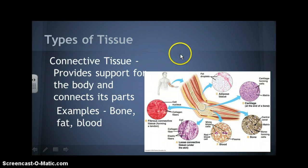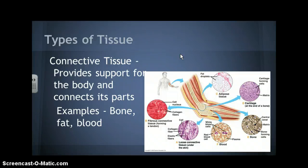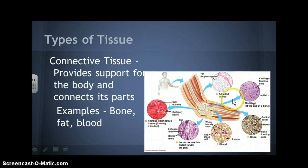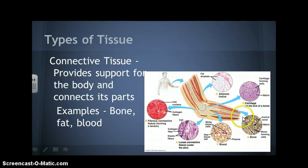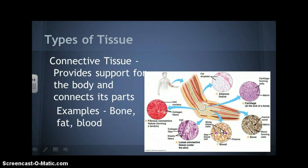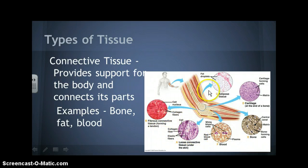There's also connective tissue, and this provides support for the body and connects its different parts. Examples of this would be bone, fat, and blood. Here are some pictures: adipose tissue and fat droplets, cartilage found at the end of the bone, the bone itself, blood with its main components — white blood cells, red blood cells, and plasma — as well as loose connective tissue and fibrous connective tissue.